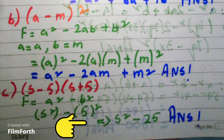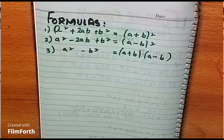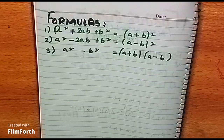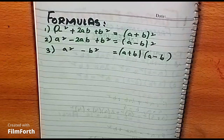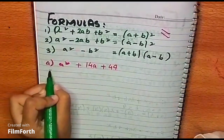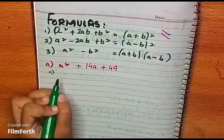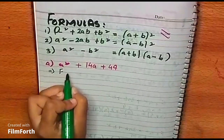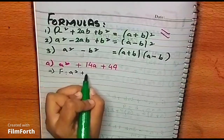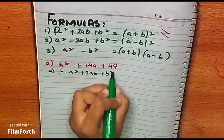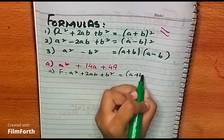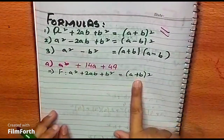Now I am going to tell you the formula and examples of the factorizing method. For the first formula: a² + 2ab + b² is equals to (a + b)², so the answer will be (a + b) whole square.